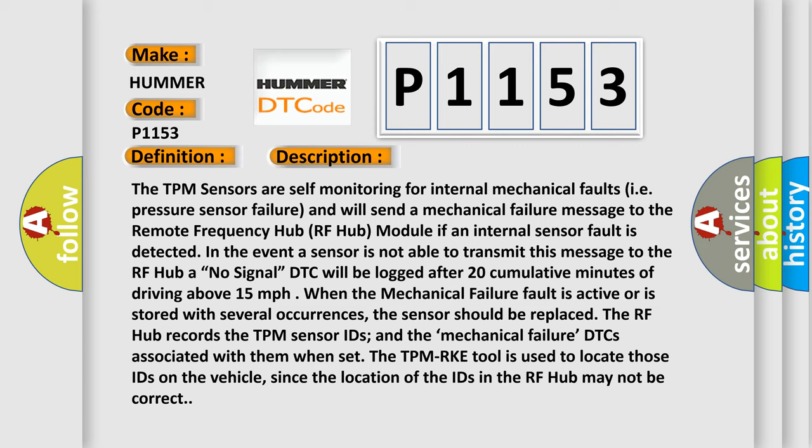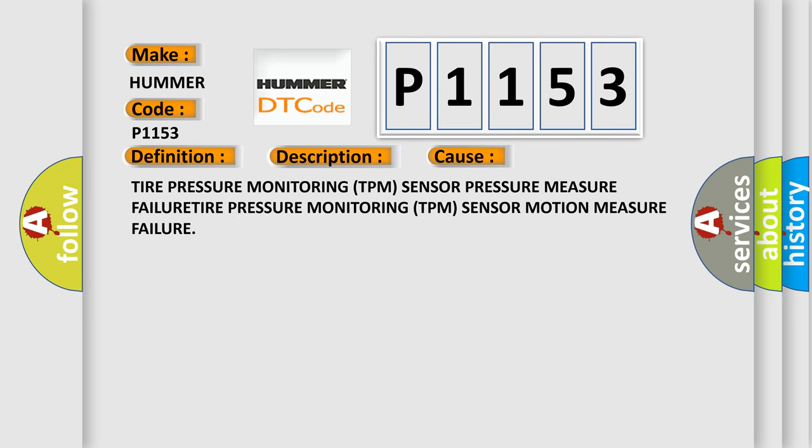The RF hub records the TPM sensor IDs and the mechanical failure DTCs associated with them. When set, the TPM RKE tool is used to locate those IDs on the vehicle, since the location of the IDs in the RF hub may not be correct. This diagnostic error occurs most often in these cases: tire pressure monitoring TPM sensor pressure measure failure, and tire pressure monitoring TPM sensor motion measure failure.